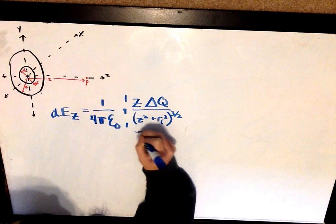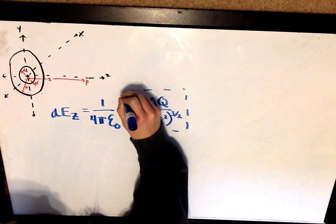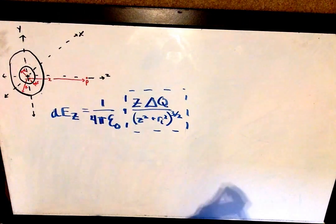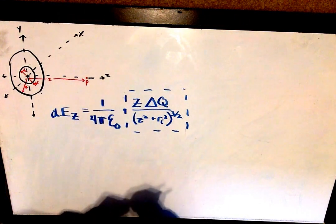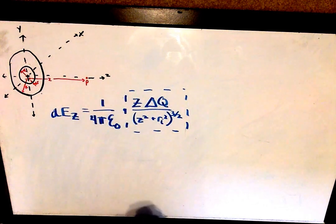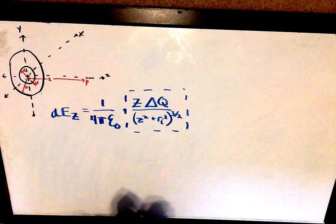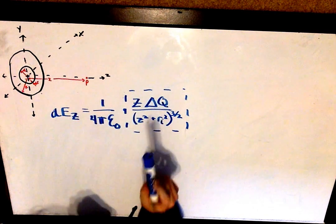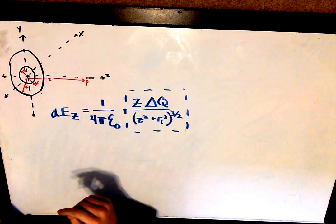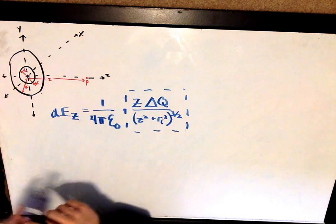To get this ring equation, you'd have to watch another video and derive it — on a test you would have to derive it on your own, but for the purpose of this video I just used it directly. From here, we have to notice that we need to make some substitutions. The only substitution we have to make is for delta q, and since this is no longer a ring, we have to use area charge density.